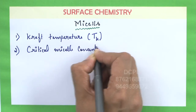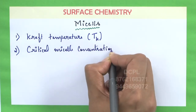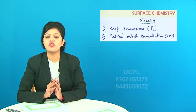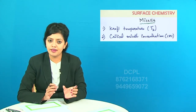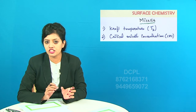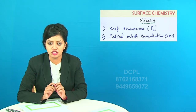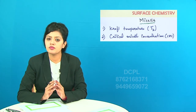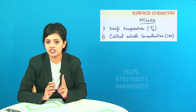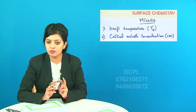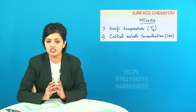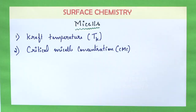Critical Micelle Concentration is simply given as CMC. For soaps, the CMC is 10 to the power minus 4 to 10 to the power minus 3 mole per dm³. Apart from this, micelles have two parts: lyophilic parts as well as lyophobic parts.